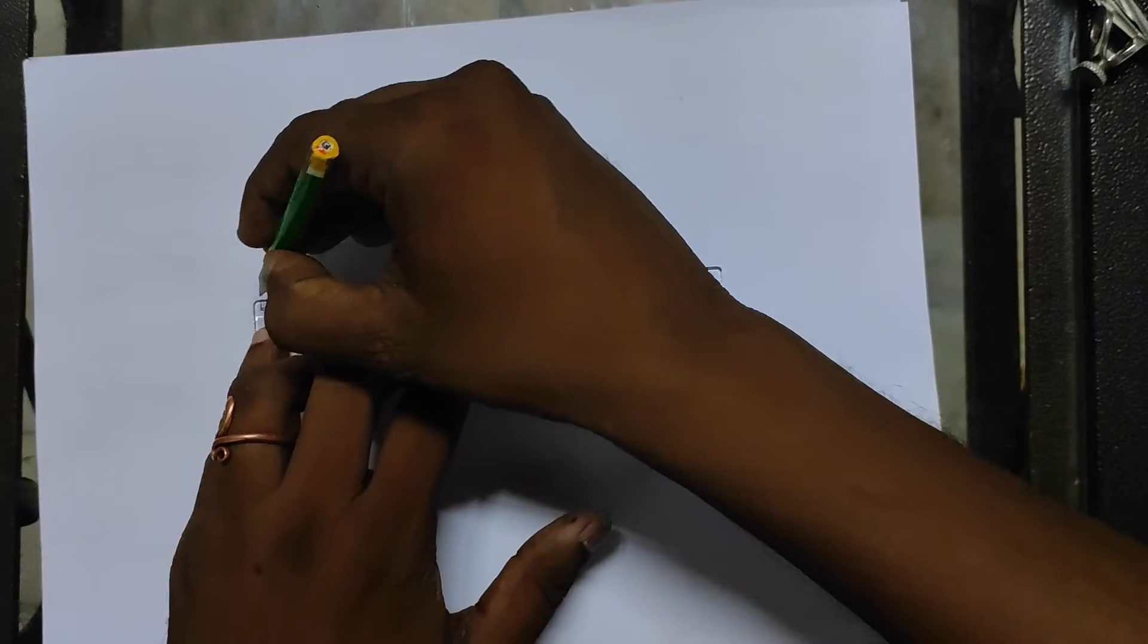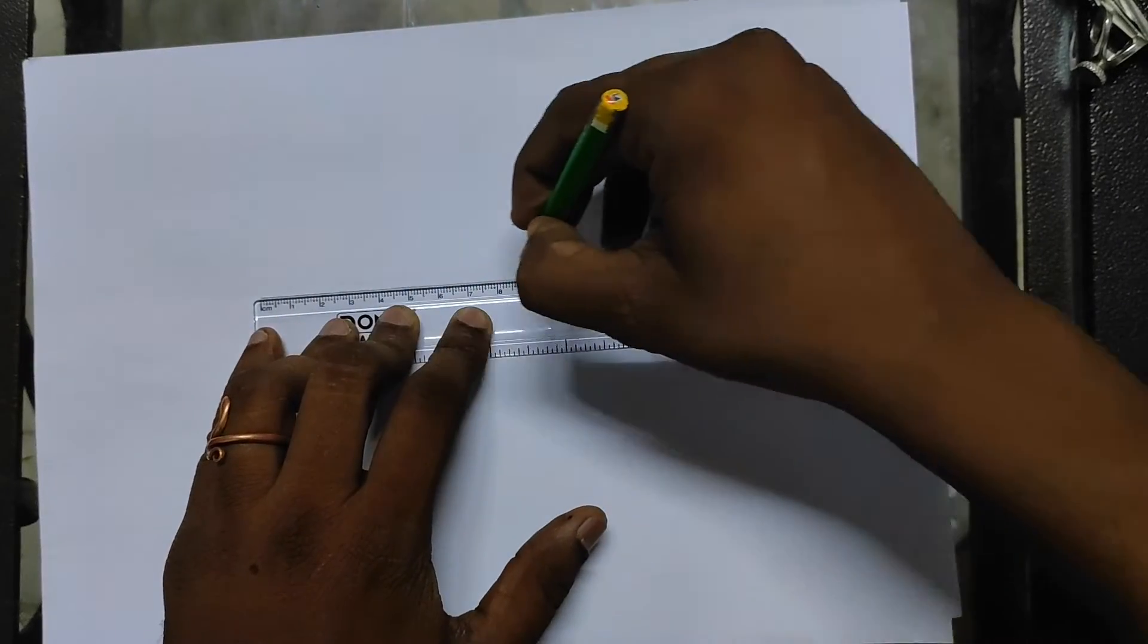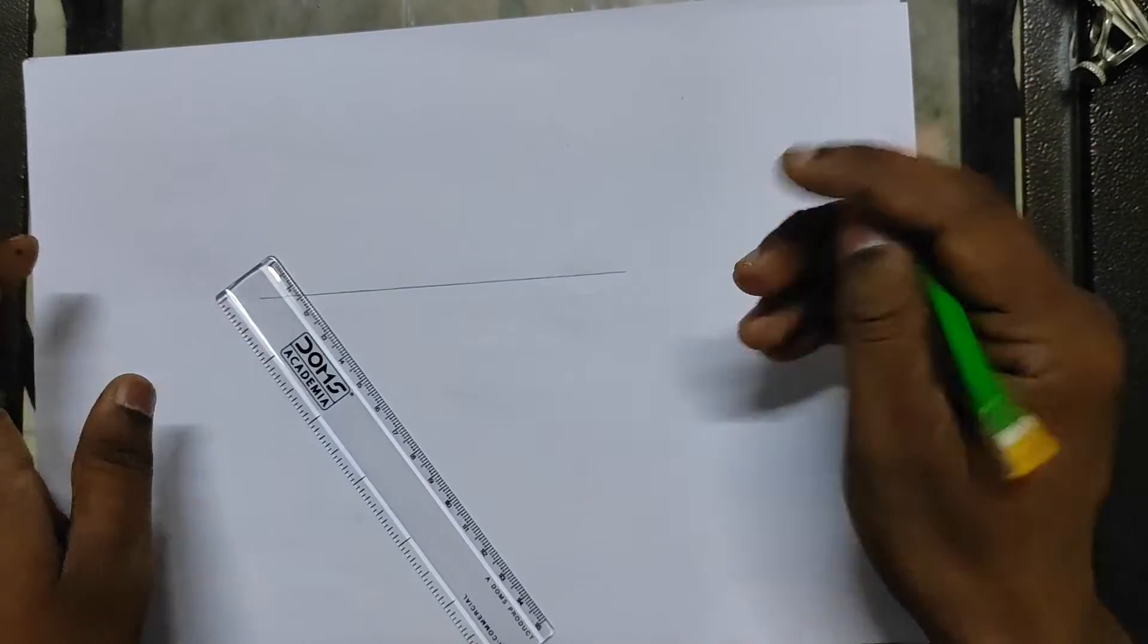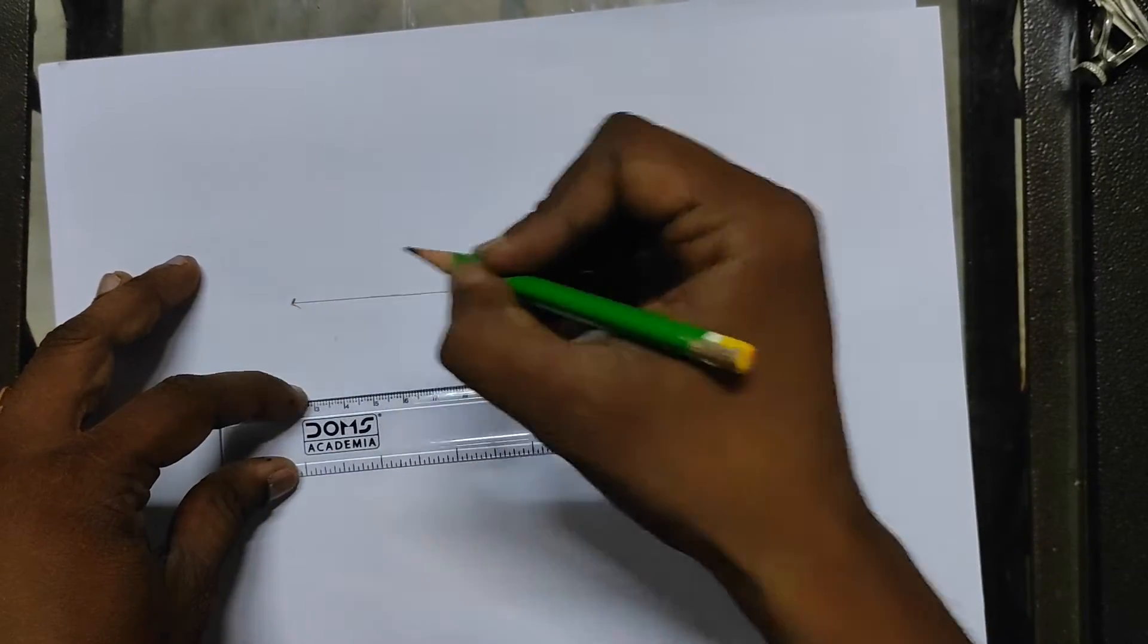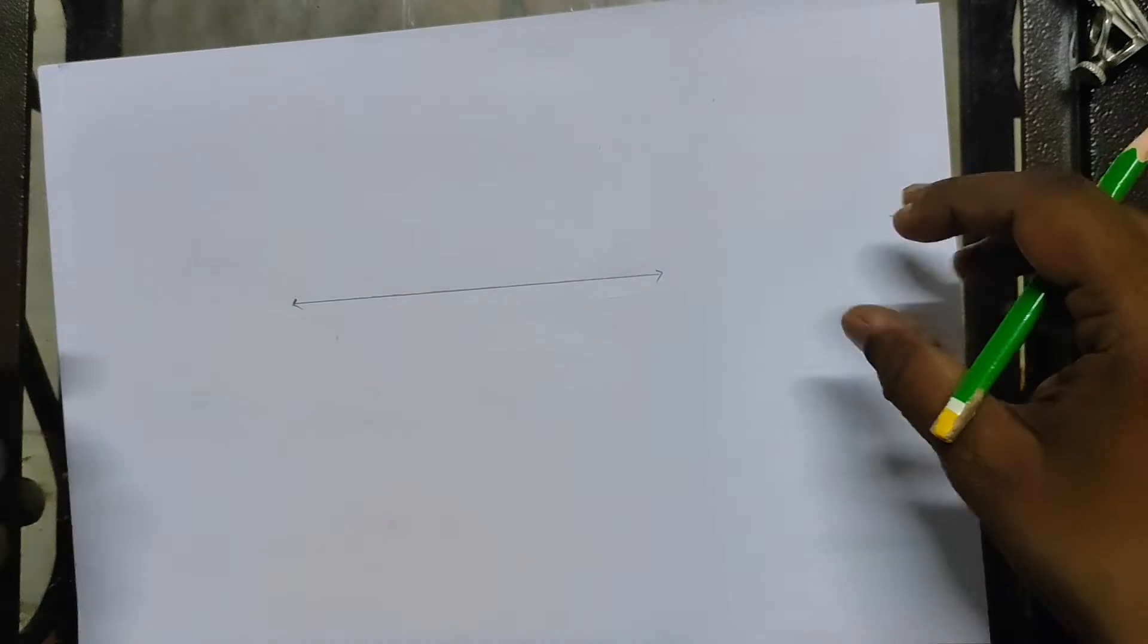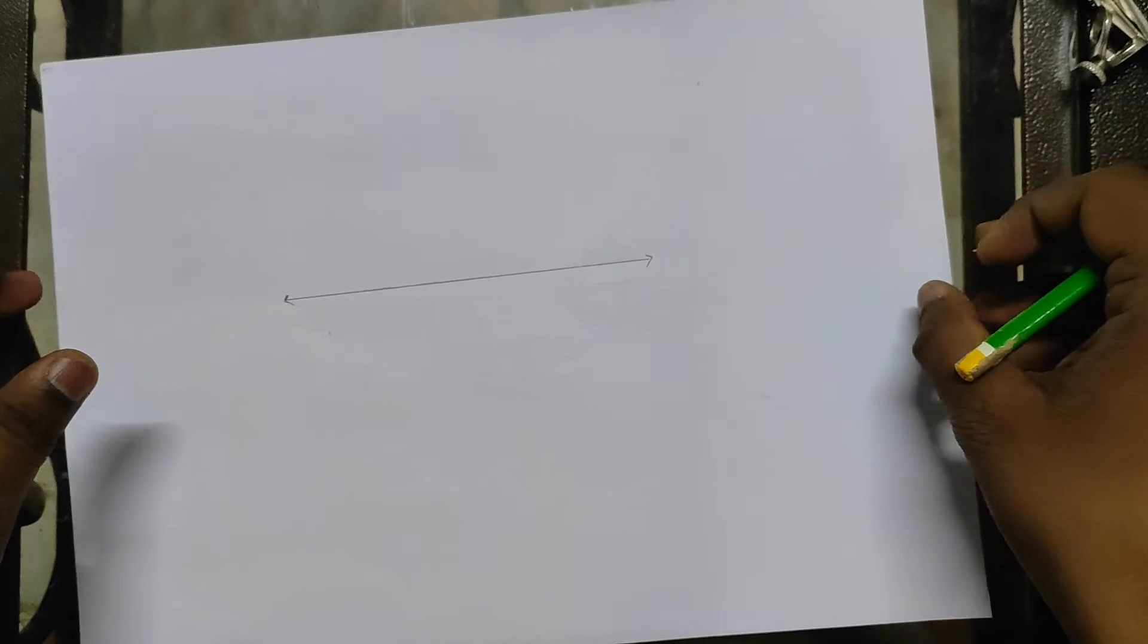Okay, so again the same thing, we are going to first make a number line. Okay, so this is my number line. The question is represent root 5 on a number line.